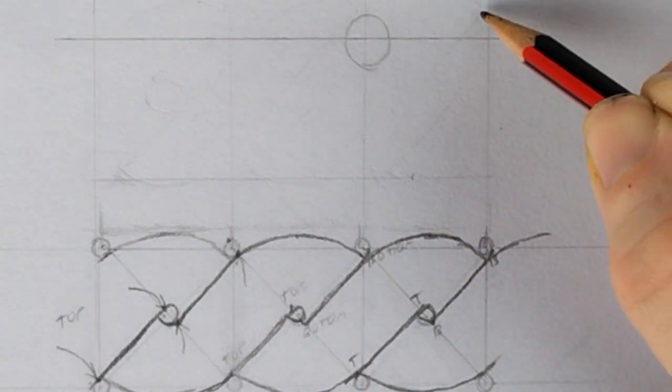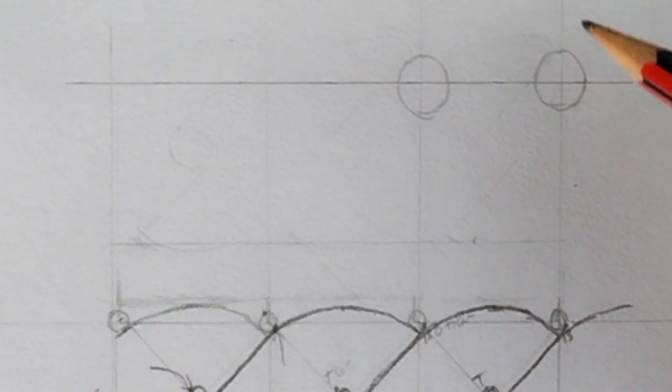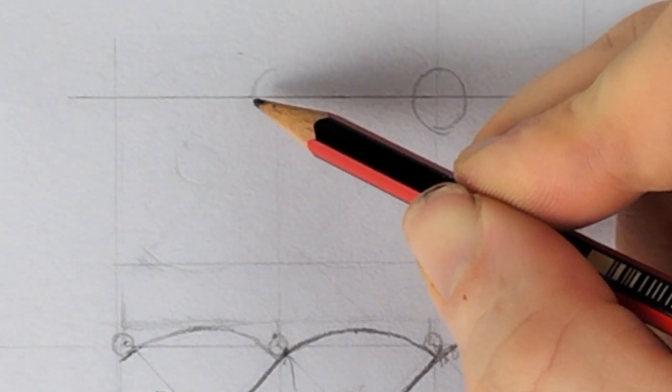This time draw much bigger circles on the corners and centers of the squares, making them approximately the same size as each other.